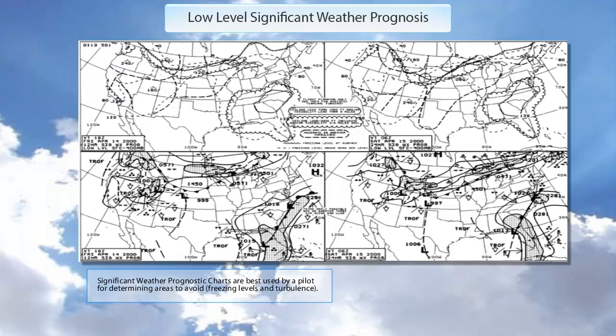Another answer option says for analyzing current frontal activity and cloud coverage — but you don't actually see cloud coverage on this chart. It shows areas of precipitation on the bottom part, and whether it's snow or not, but not the actual cloud coverage. The clouds could extend further than the precipitation shown. The correct answer is: for determining areas to avoid, freezing levels, and turbulence.